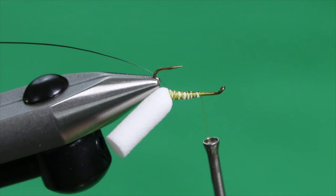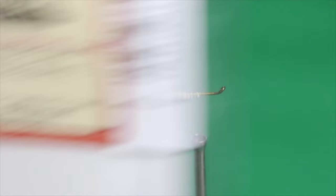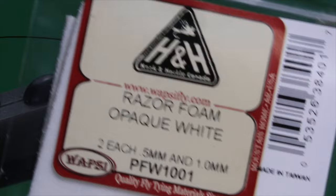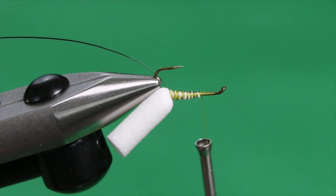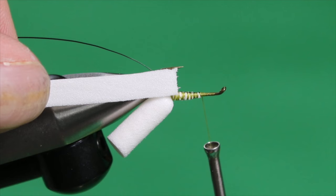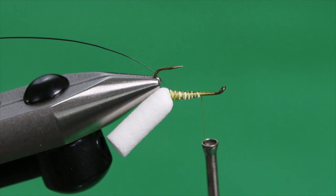Now for the shell back, I just need something white. So I'm going to use razor foam in opaque white. This is 0.5mm. It's not really for its buoyancy. It's more for its color to suggest the white back of the natural backswimmer. We're getting our buoyancy in this case from the foam post. So I've trimmed a slip from the sheet that's no wider than the hook gape. Even slightly narrower would be better. And then I'm going to trim one end of that slip into the point like a picket from a picket fence, like so.